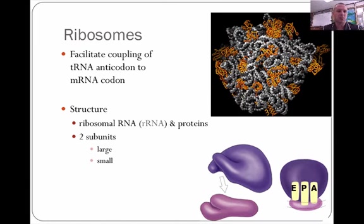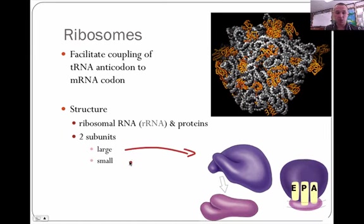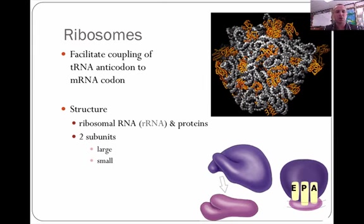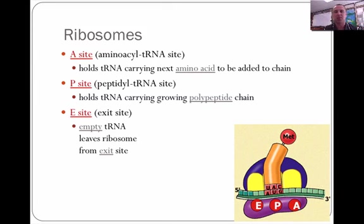The ribosome is the structure that actually reads the mRNA, and it's made up of two subunits — a large subunit and a small subunit. Within every ribosome there are three sites: the A, P, and E sites — or APE sites. These are where different things happen to the tRNA.